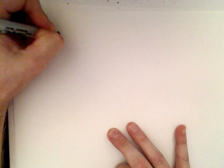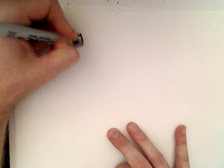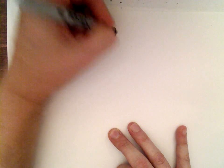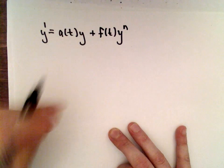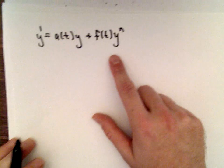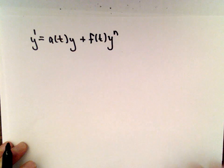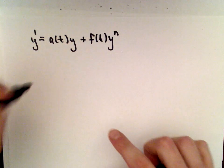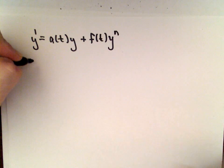So let's start here. Suppose that we've got this equation: y' = a(t)y + f(t)y^n, where n is not equal to 0 or 1. Good old Leibniz, one of the creators, inventors, discoverers, founders of calculus, he realized, he said, if you make a change of variable...